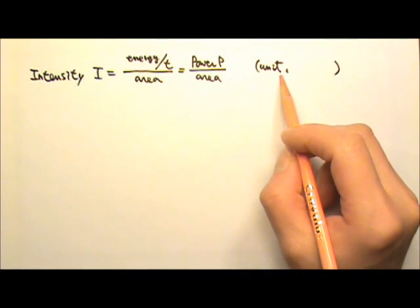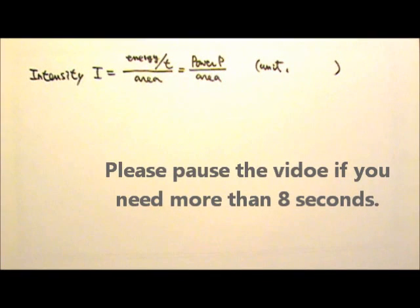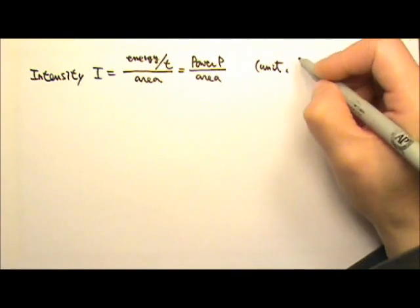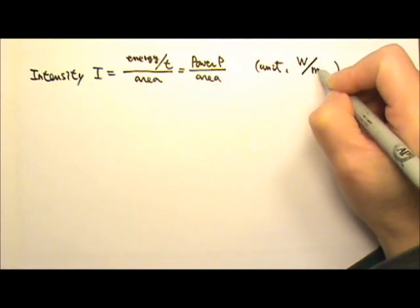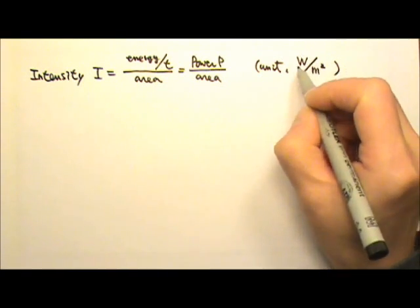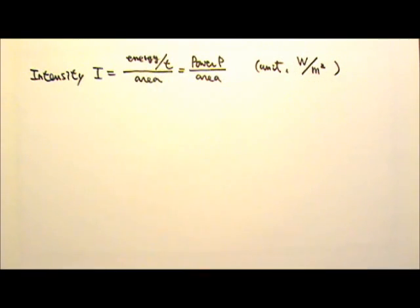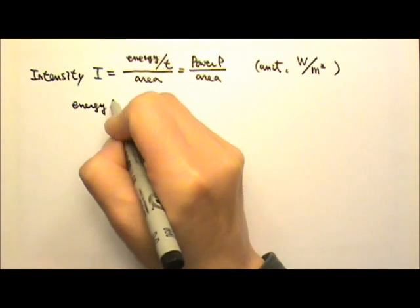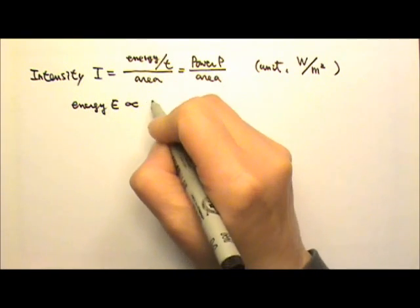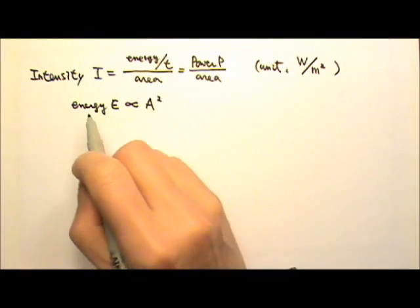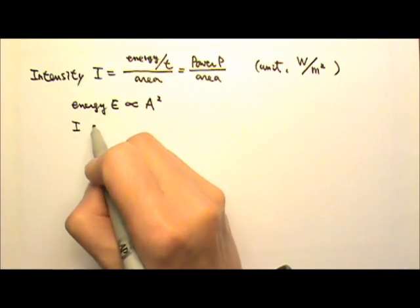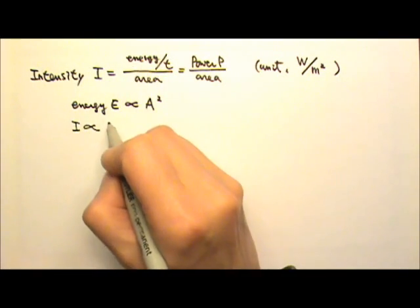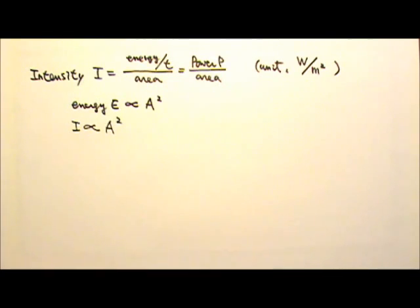What do you think is the unit for intensity? Since it's power per area, it is watts per meter squared. And of course, watts is also joules per second. Because the energy E of a wave is proportional to the amplitude squared, that means the intensity, which is proportional to the energy, is proportional to the amplitude squared.